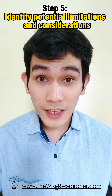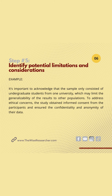Step number five: identify the limitations and constraints. For example, it's important to acknowledge that the sample only consisted of undergraduate students from one university, which may limit the generalizability of the results to other populations. To address ethical concerns, the study obtained informed consent from the participants and ensured the confidentiality and anonymity of their data.